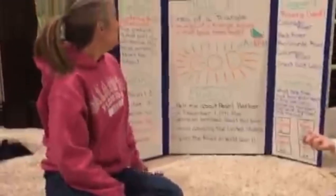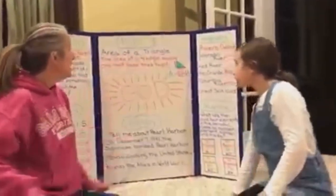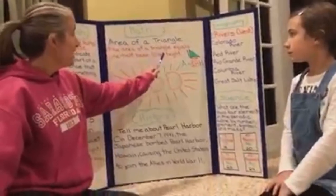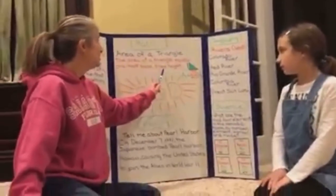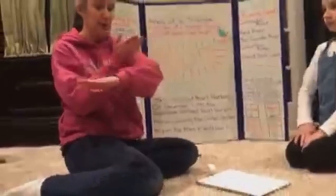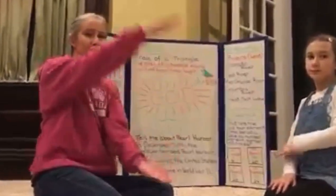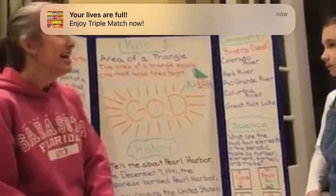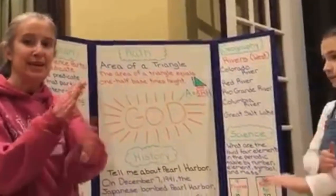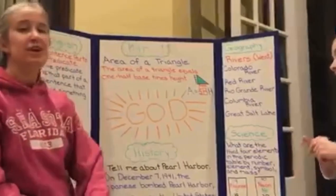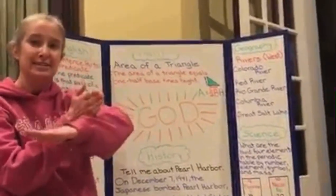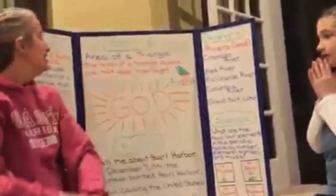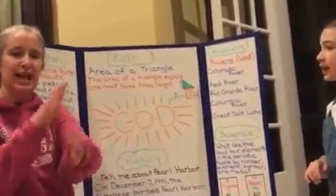Let's move on to math. We have the area of a triangle. You learned a song to go with this: the area of a triangle equals one half base times height. We're going to go one half across the base and go up for height. The area of a triangle equals one half base times height. One half base times height.